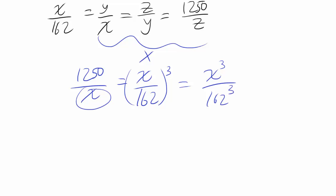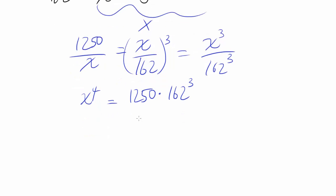Moving X over to the other side gets you X to the fourth. Moving 162 cubed over to the other side gets you 1250 times 162 cubed. Let's prime factorize it so when we take fourth root, it's easy to take fourth root.